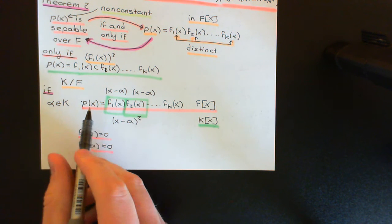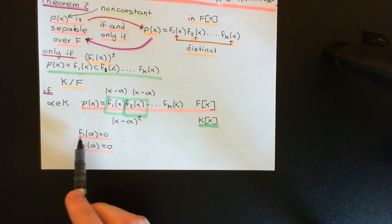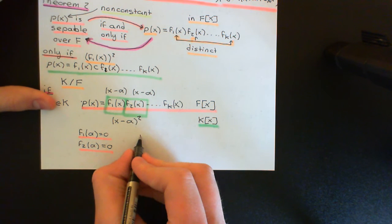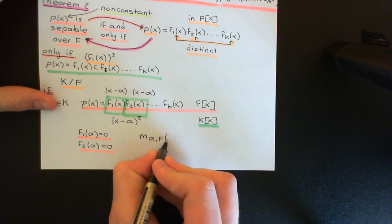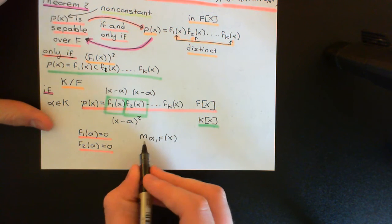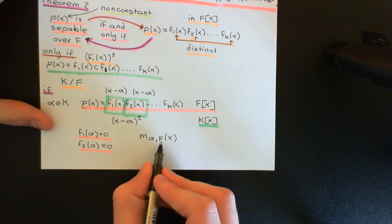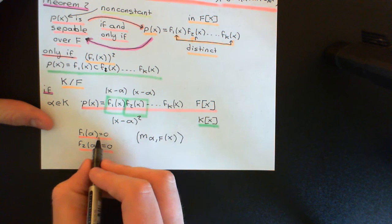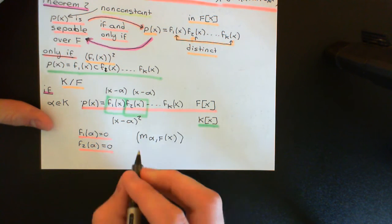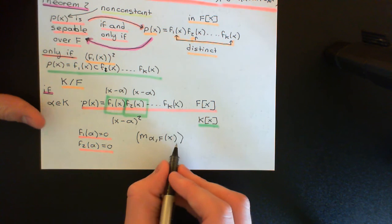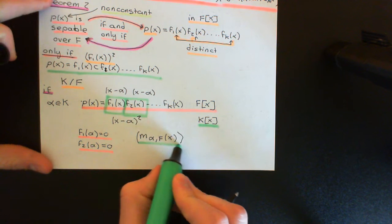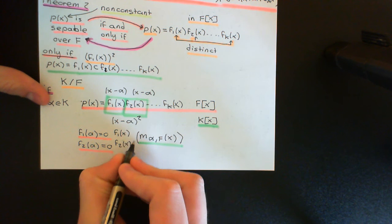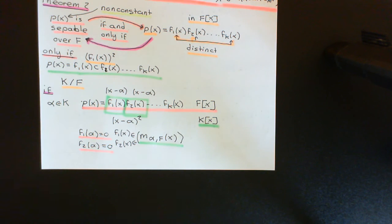The reason is that alpha is algebraic over F — it's the root of a non-zero polynomial over F. So there exists a minimal polynomial for alpha over F in the ring of polynomials over F: the unique monic irreducible polynomial with alpha as a root. Any other polynomial over F with alpha as a root must be a multiple of this minimal polynomial — it lies in the principal ideal generated by it.